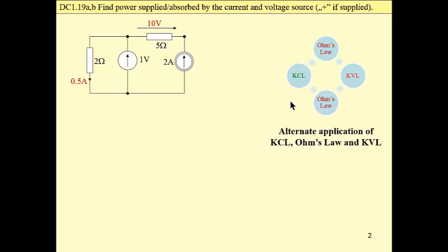So at first, alternate application of Kirchhoff's laws and Ohm's law. From Ohm's law, as we know current that flows through this resistor, we may find its voltage. We know voltage across this resistor and we can find this current.